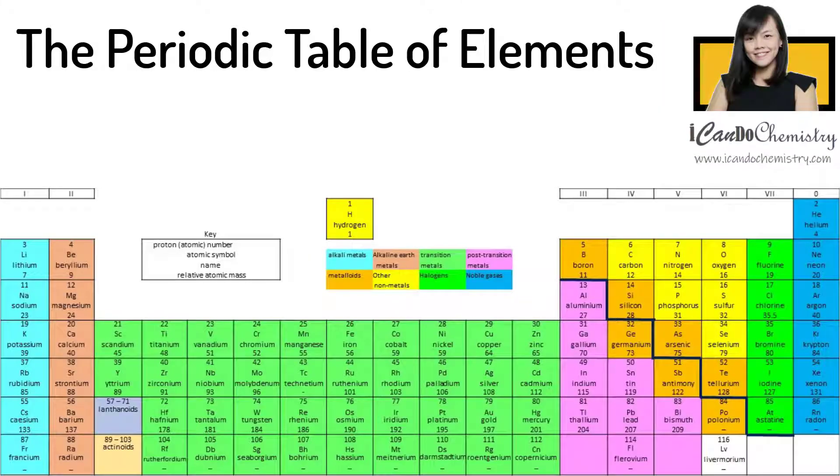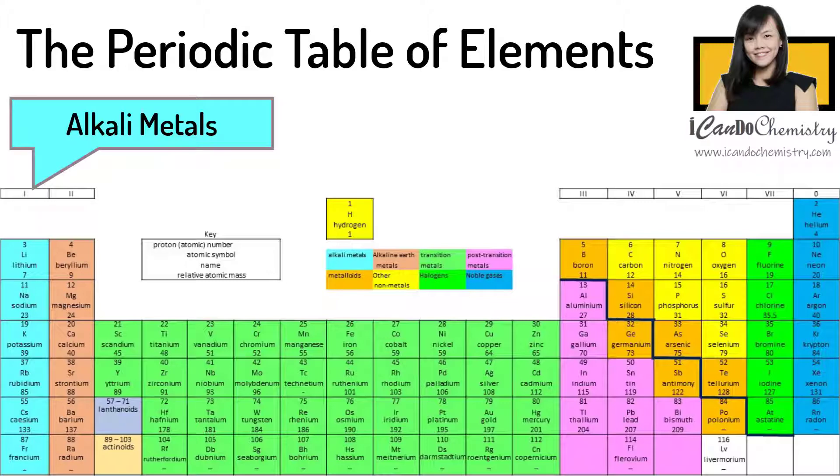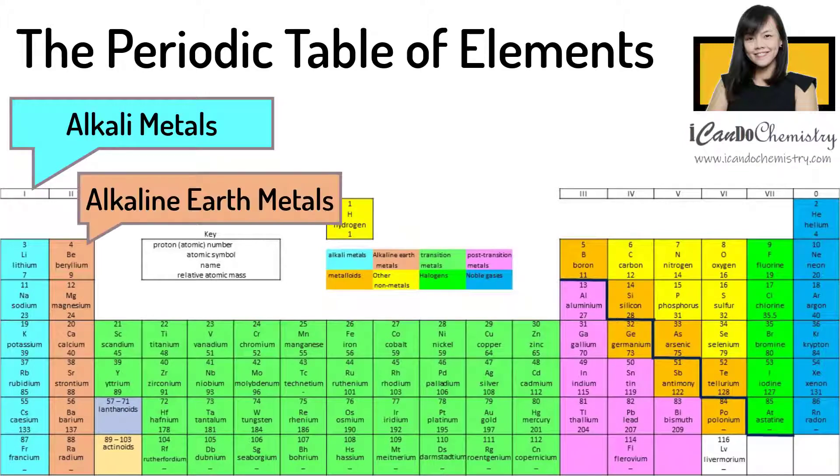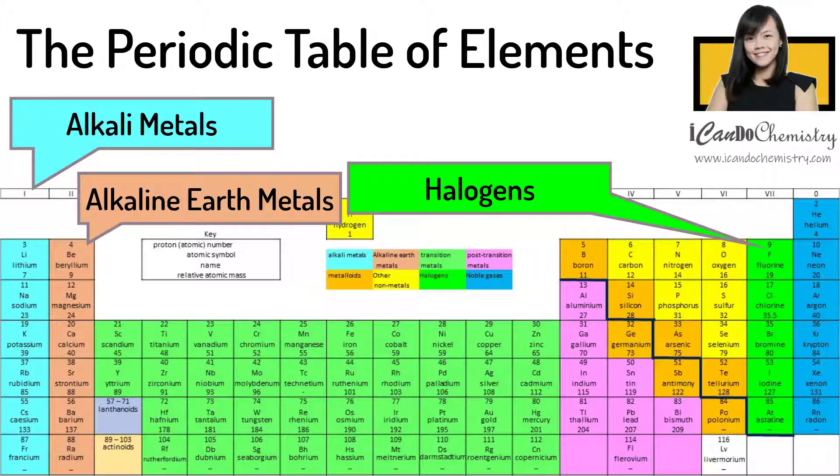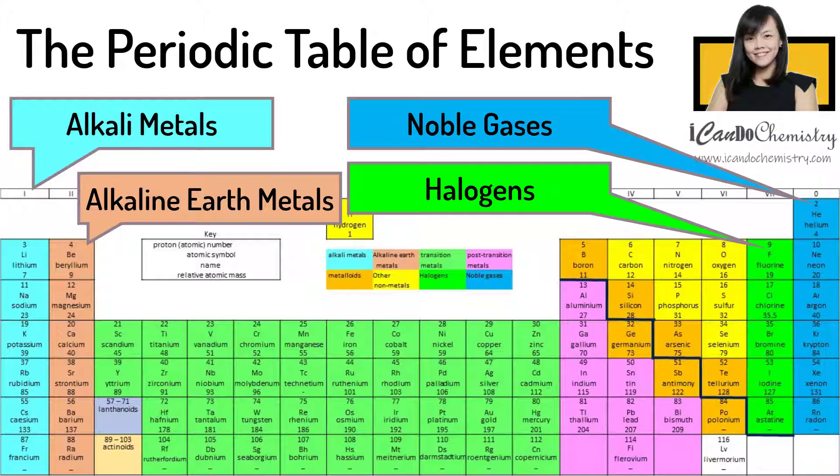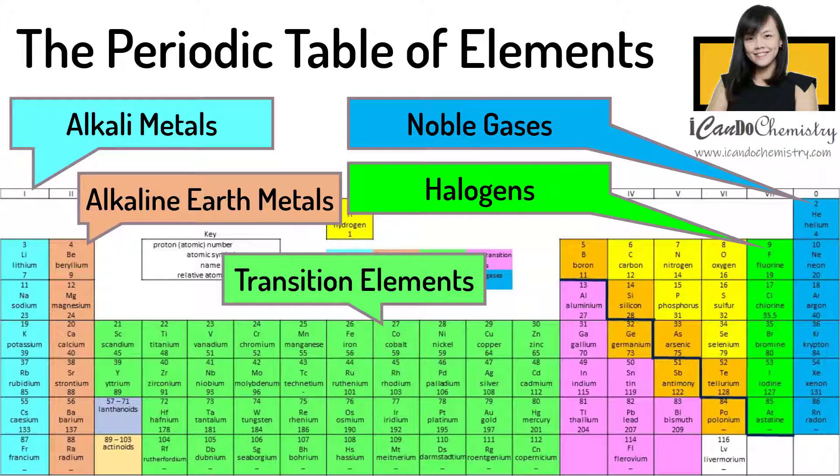Elements in group 1, we can call them the alkali metals. Elements in group 2 are called alkaline earth metals. Those in group 7 are called halogens. Those in group 0 or 8 are called noble gases. The elements between group 2 and 3 are called transition elements.